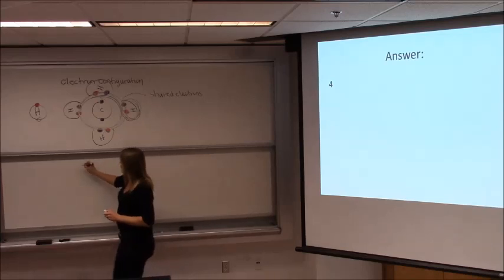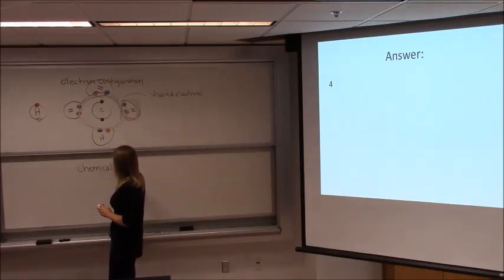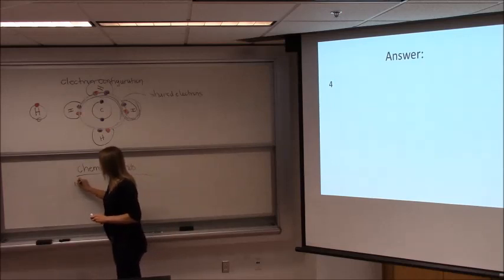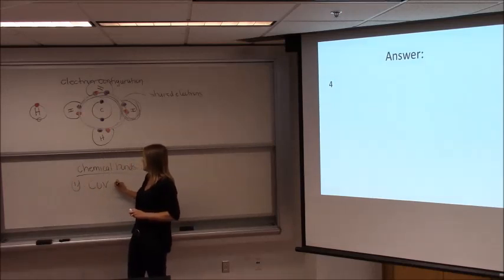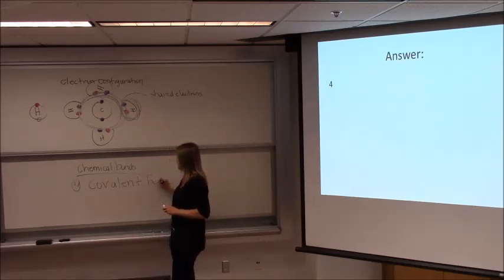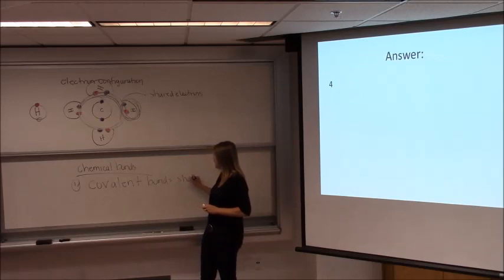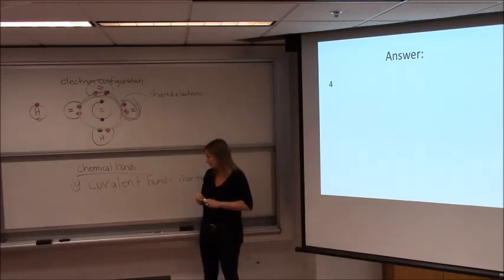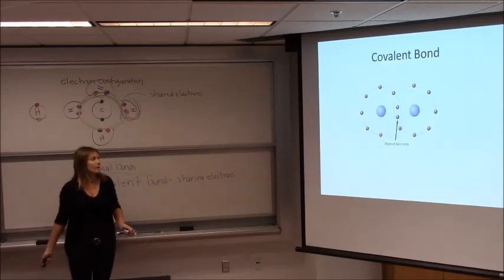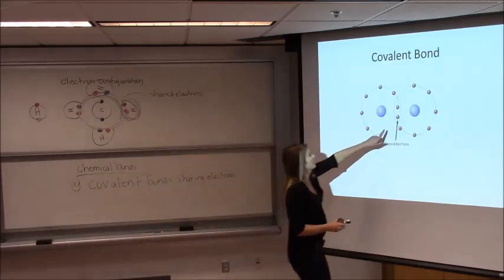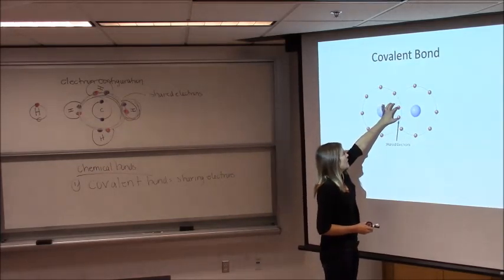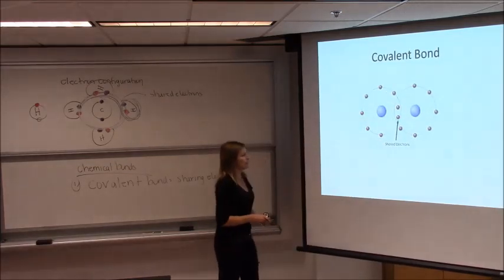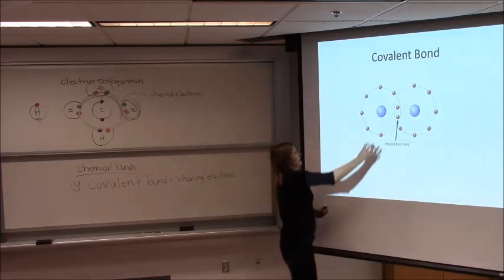So we're going to start talking about chemical bonds — this is how molecules form. The first category of chemical bonds involves sharing electrons, and it's called a covalent bond: sharing electrons so that each atom has a full outer shell. These two shared electrons no longer belong to just one atom; they are shared and orbit each of these atoms, so now each atom has a full outer shell. Remember, a full outer shell for the second shell is eight.